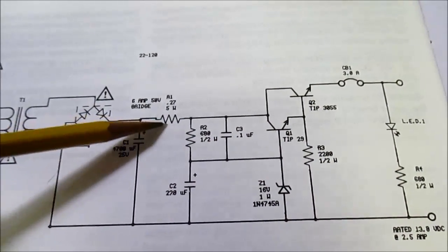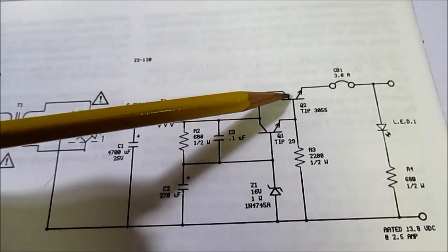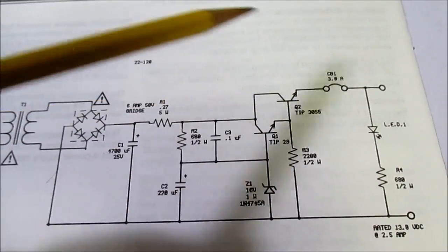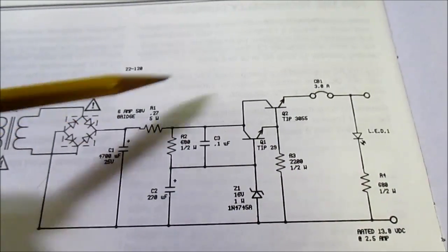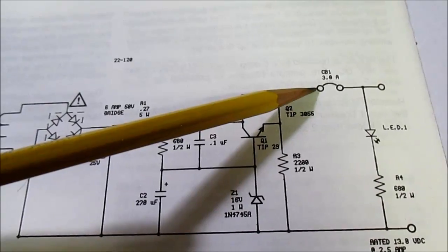The reason I think that's there is to protect these transistors in case this is directly shorted. You don't want a sudden jolt of current from the capacitor which could blow that transistor. So that kind of limits the current a little bit, allows this circuit breaker here some time to operate.